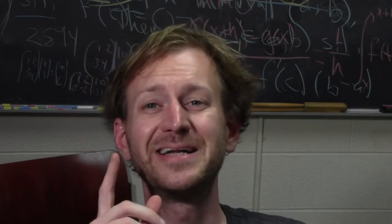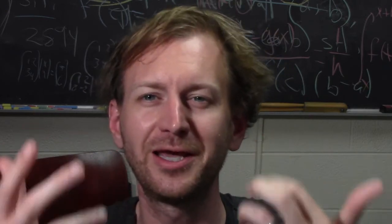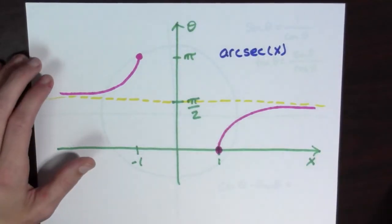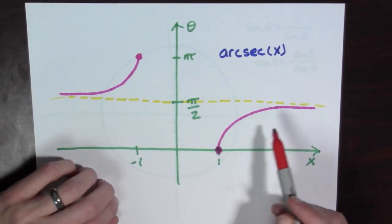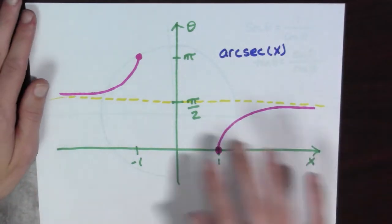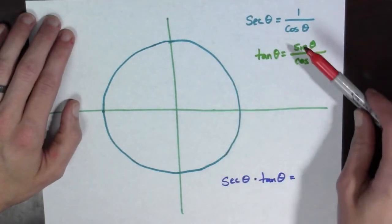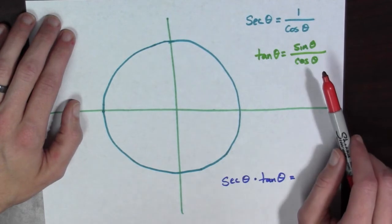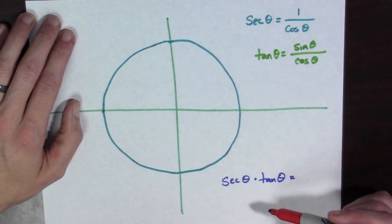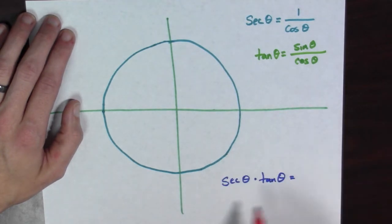Let's take a second to investigate the graph of arc secant once more, and we're going to see our old frenemy, the unit circle. Here we see a plot of arc secant, and notice that for various values of x, arc secant only outputs values between 0 and pi, not including pi over 2. So if we think about secant of theta — that's 1 over cosine — and tan theta equals sine theta over cosine theta, and in our derivation we're working with secant theta times tan theta, let's see if we can shed light on what this is.